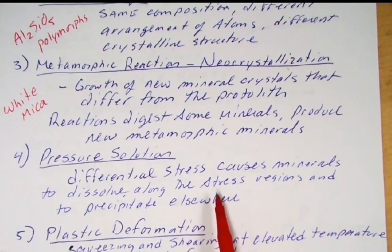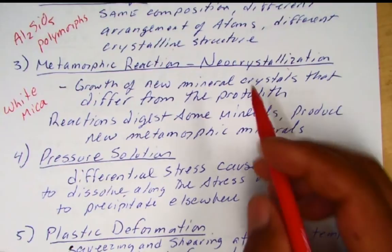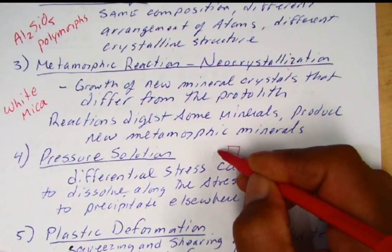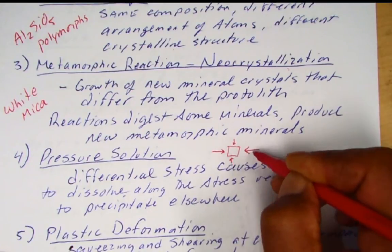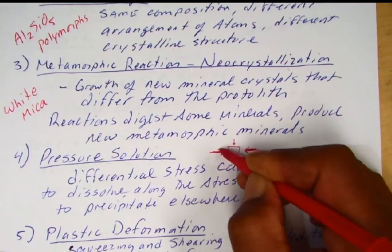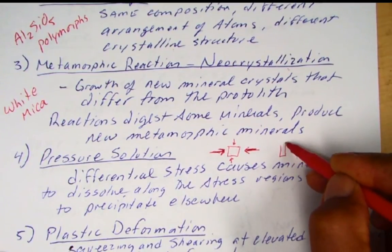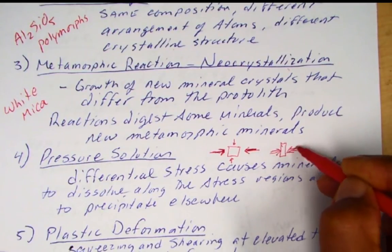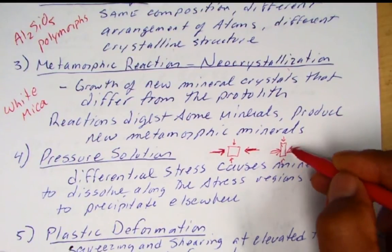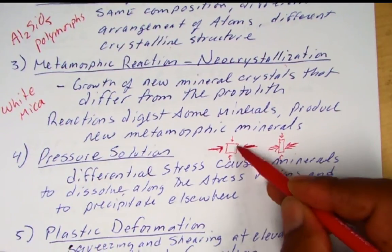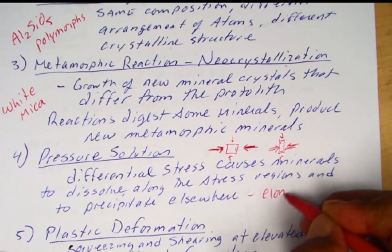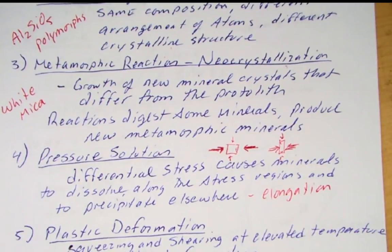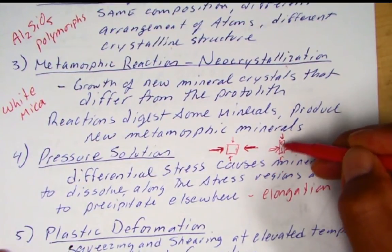Another interesting process is pressure solution, where you get differential stress. If we apply a heavier stress in one direction and a weaker stress in the other, the rock gets stretched out. Minerals dissolve along the high-stress edges but recrystallize on the outer regions, resulting in elongation — minerals appear preferentially grown in the weaker stress direction.